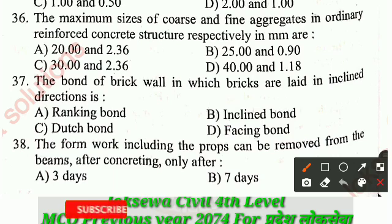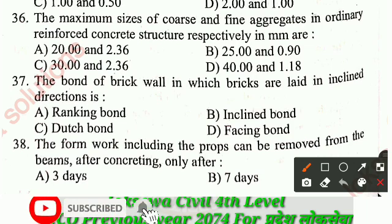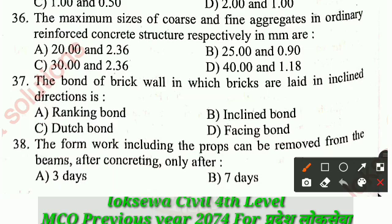Question number 36: The maximum size of coarse and fine aggregate in an ordinary reinforced concrete structure respectively in mm. The correct answer is: coarse aggregate 20 mm and fine aggregate 2.36 mm.